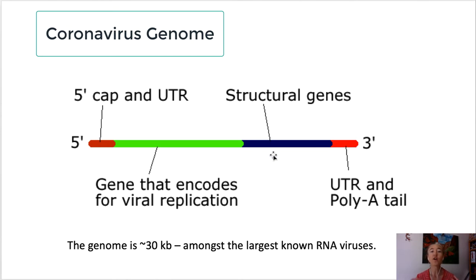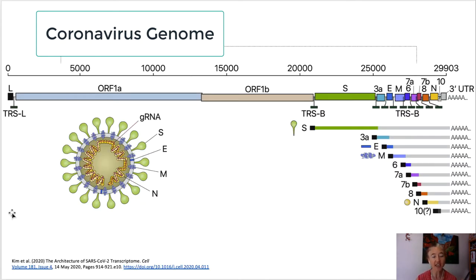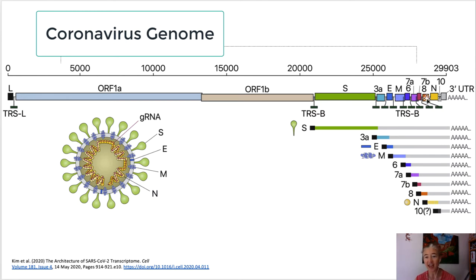Down here are the genes that encode for the structure — the S protein, the M protein, the E protein, all of these structural things. In a more detailed view, you can see ORF1a and ORF1b, the non-structural proteins, which take up about two-thirds of the genome. Then down here is the gene encoding the S protein — the spike that makes the crown — and the gene for the E protein and N protein, encoded near the poly-A tail. The N protein is the one that associates with the RNA. All of the structural proteins are packed into this area of the RNA.